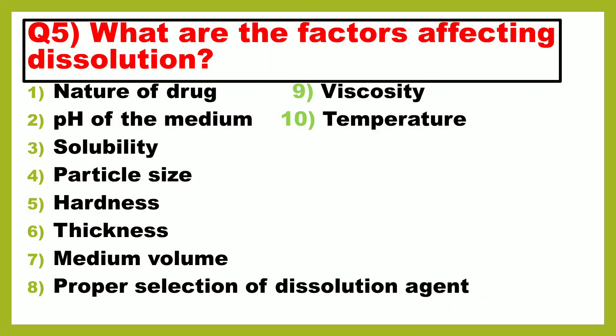Next question is: what are the factors affecting dissolution? Number 1: nature of drug. Number 2: pH of the medium. Number 3: solubility. Number 4: particle size. Number 5: hardness. Number 6: thickness. Number 7: medium volume. Number 8: proper selection of dissolution agent. Number 9: viscosity. And number 10 is temperature.